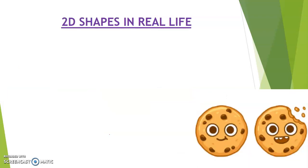2D shapes in real life. Have you ever eaten a delicious round cookie? Yes, it is also in the shape of a circle. Round and round.